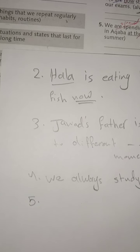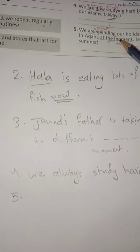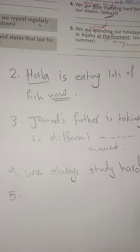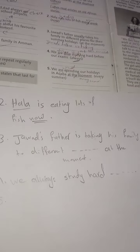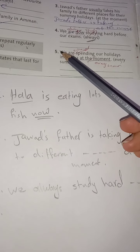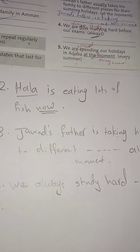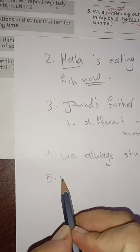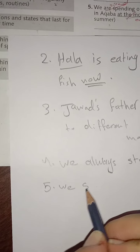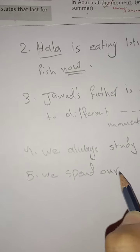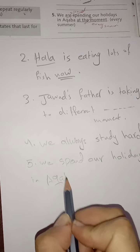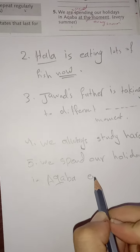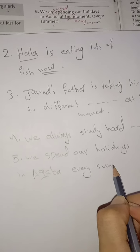Number five: 'We are spending our holidays in Aqaba at the moment.' At the moment — present continuous — we, plural subject, are + -ing. Replacing with 'every summer' — every summer goes at the end and indicates present simple. Plural subject: verb without change. 'We spend our holidays in Aqaba every summer.'